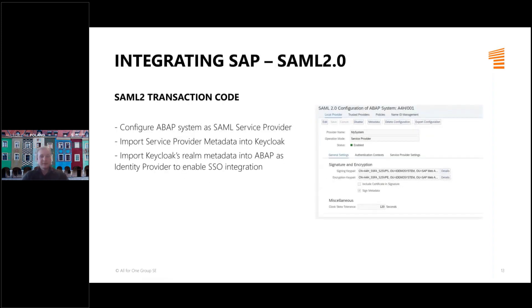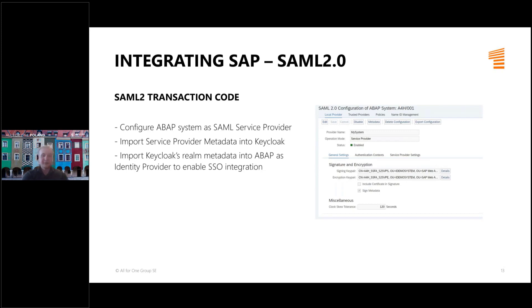How do we integrate an SAP ABAP application with Keycloak? It's really straightforward. You only need to go to the SAML2 transaction code and configure the ABAP system as a SAML service provider — basically enter a name and leave all defaults. Then you export metadata from that screen into Keycloak in XML format, and do the same on the Keycloak side: export metadata and import it into the ABAP system as the identity provider. And voilà — you can probably do this in five minutes.